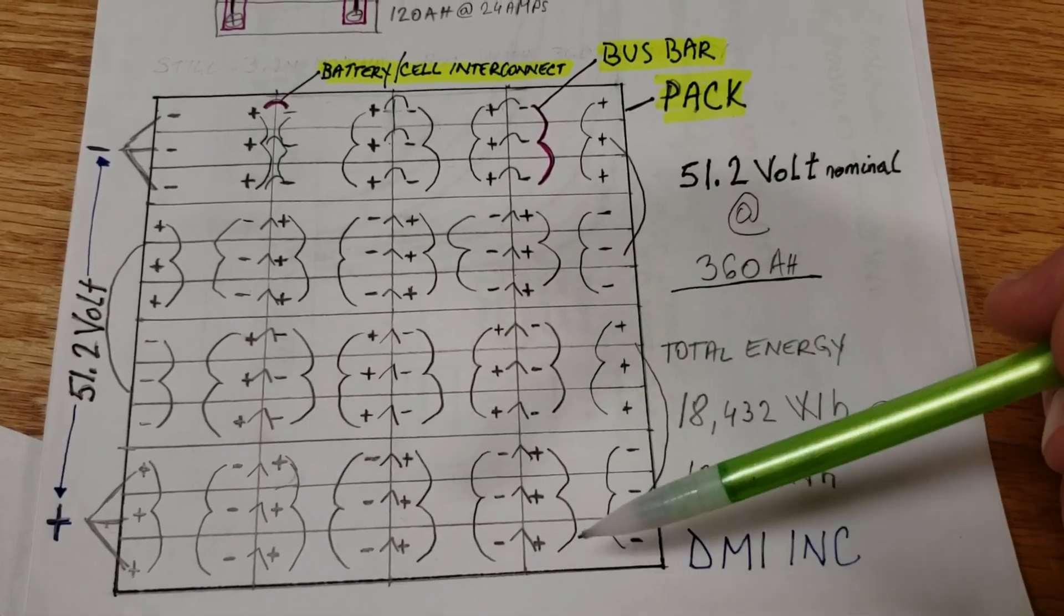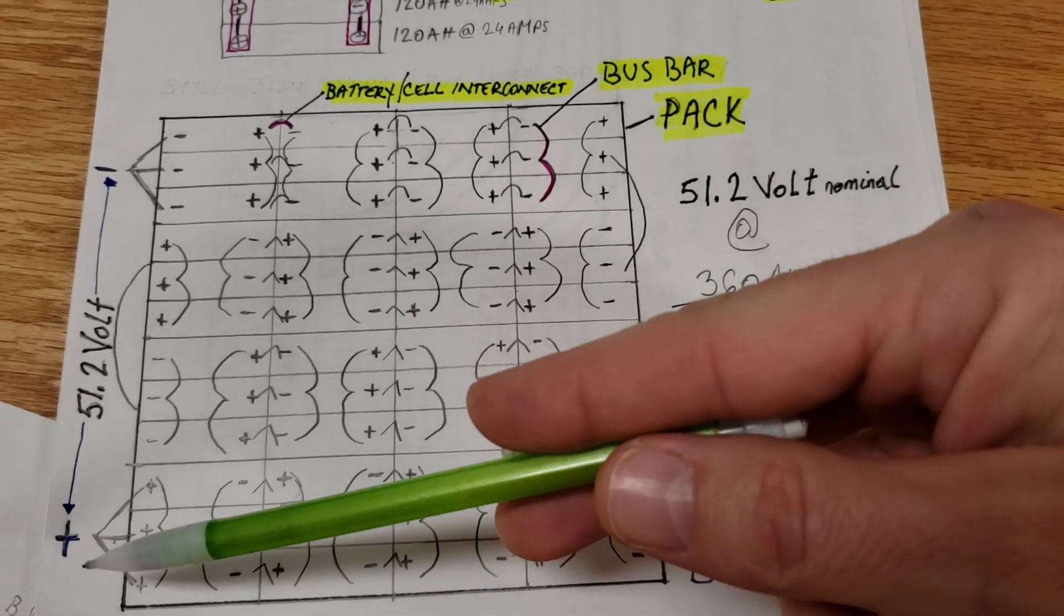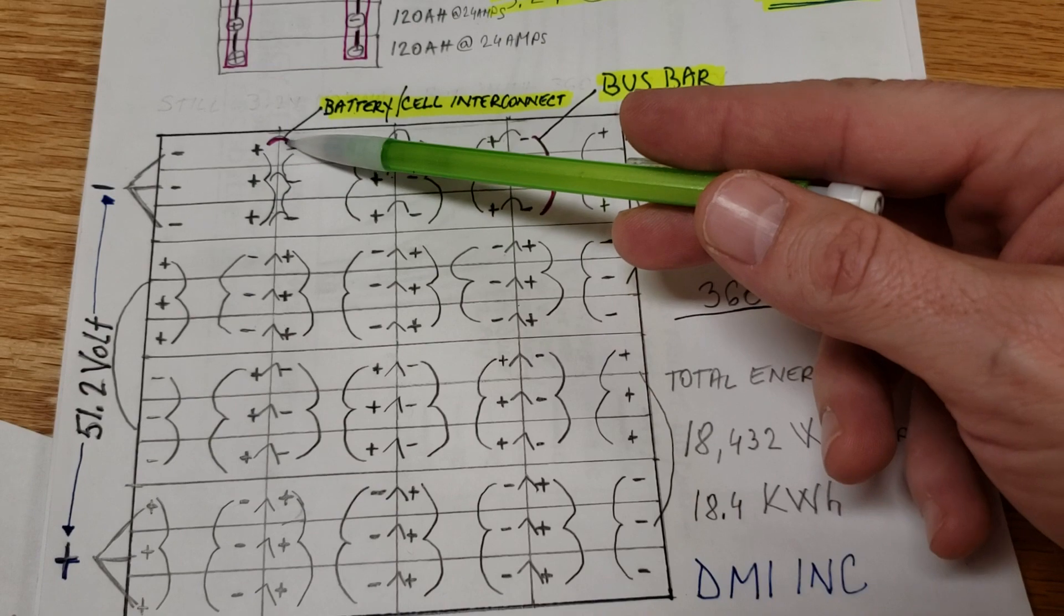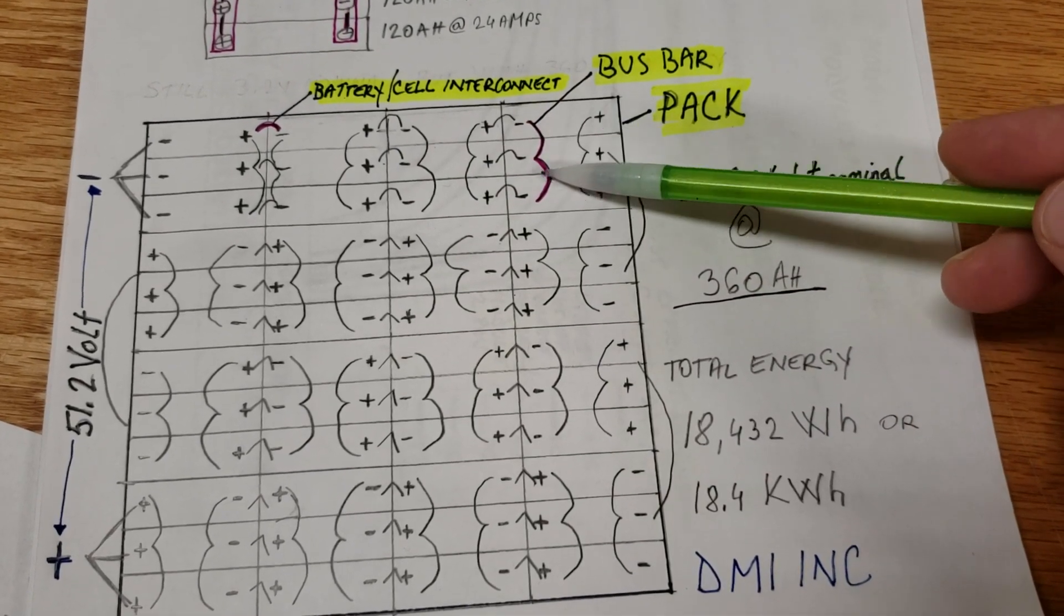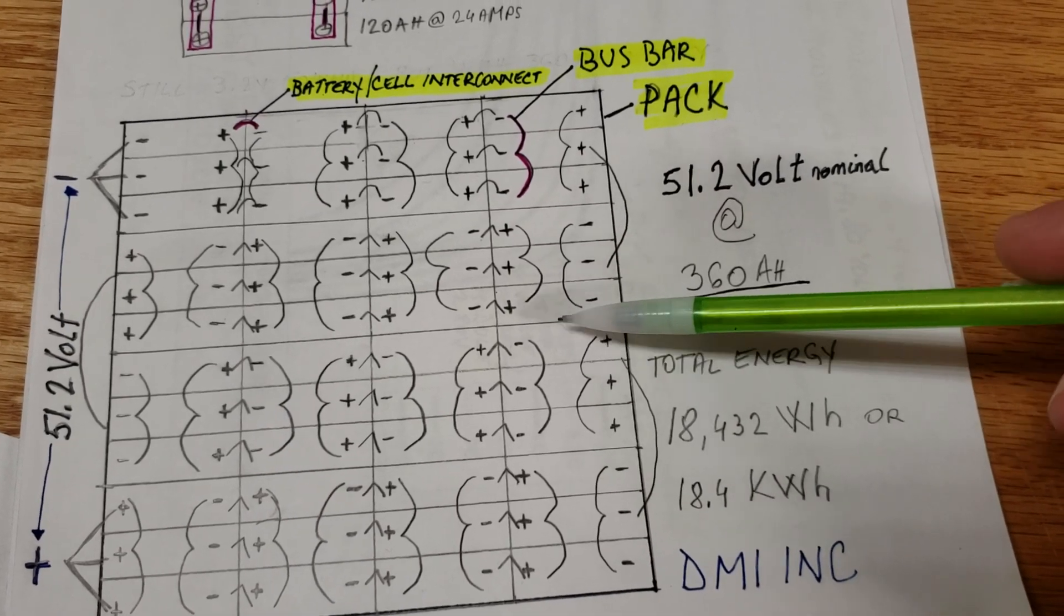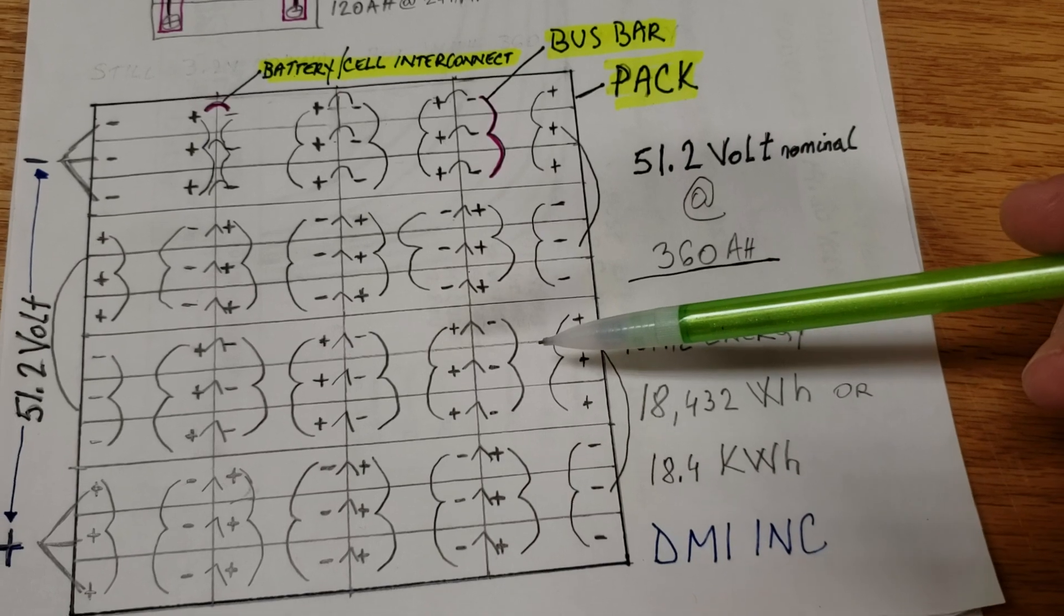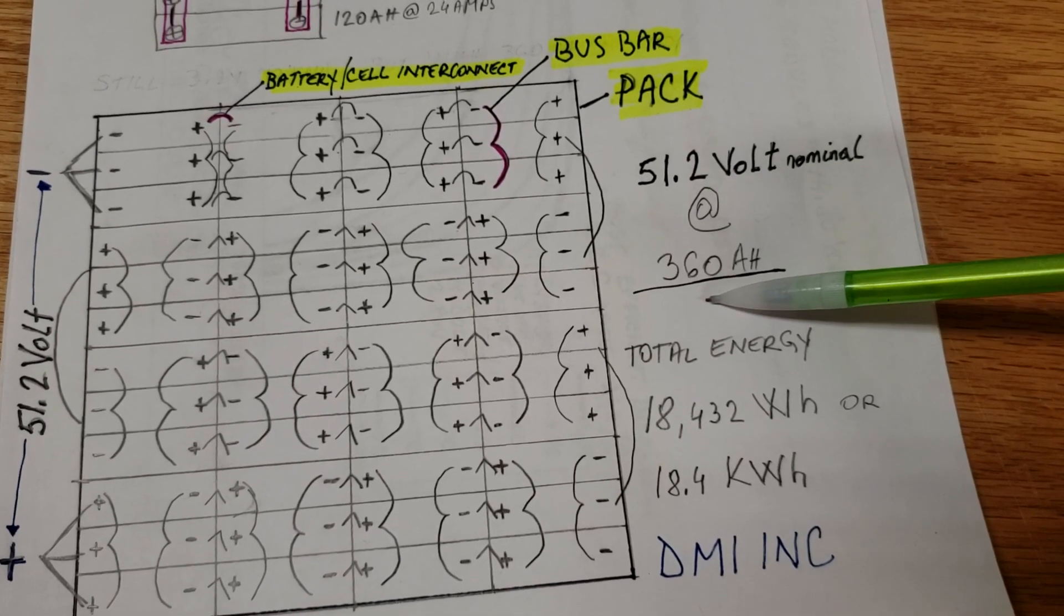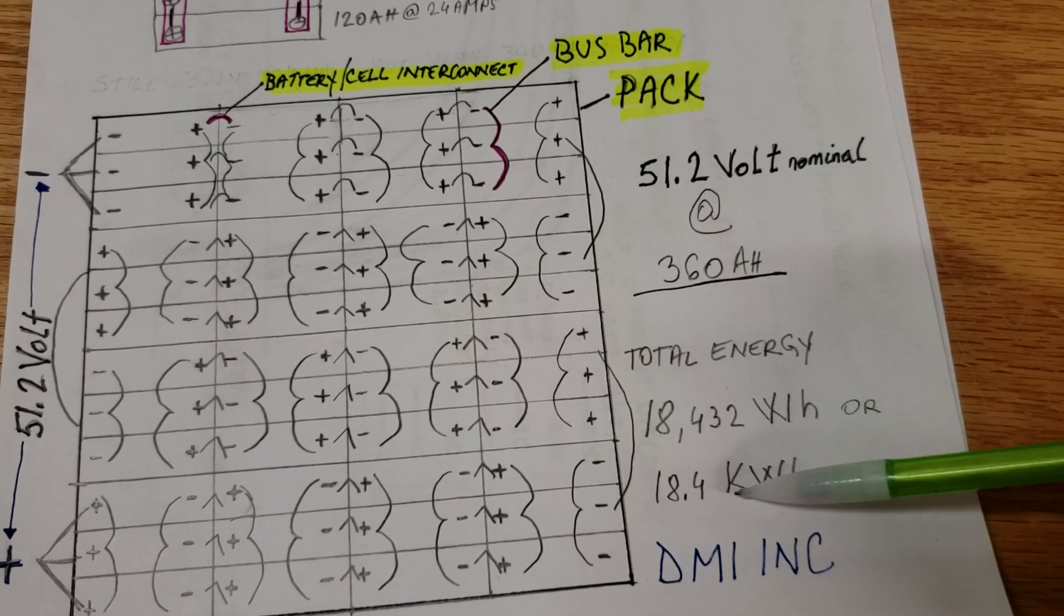Now we see on the paper representation of my total power pack or power wall or battery pack. Over here on bottom left we have the positive and they interconnect with each other. Each of these lines represents that battery cell interconnect cable, and each one of these lines indicates a bus bar. When you add all of these modules at their nominal voltage of 3.2 volts, and there are 16 of these modules, you will get total voltage of 51.2 volts nominal at 360 amp hours. Total energy is 18,432 watt hours or 18.4 kilowatt hours.